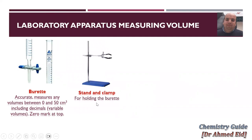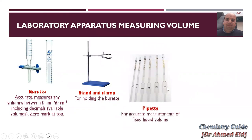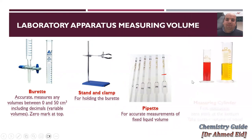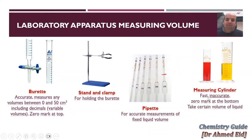The zero mark on a burette is at the top. As you can see, a clamp is used for holding the burette. For the pipette — we use the 25 cm³ pipette — it has only one mark, so it is accurate for fixed liquid volume measurements. It measures exactly 25 cm³. To measure 50, use it twice. To measure 75, use it three times. A measuring cylinder is fast but inaccurate, and its zero mark is at the bottom.